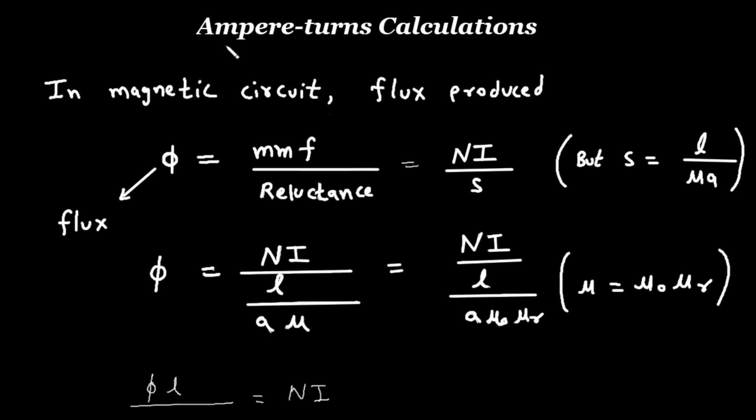In this video we will see ampere turns calculations. As we know that in magnetic circuit, flux produced is given by phi equals mmf upon reluctance.